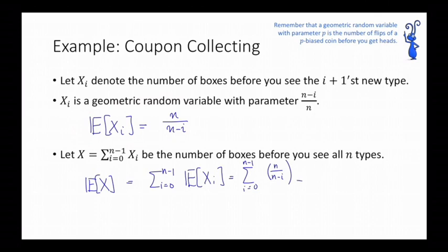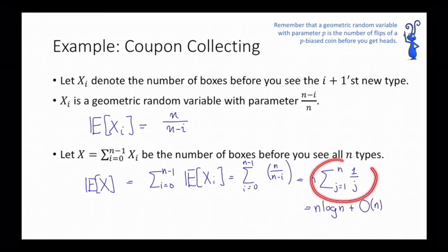Let x be the total number of boxes opened before seeing all n types of coupons; that is, x = Σ(i=0 to n−1) x_i. Using linearity of expectation, E[x] = Σ(i=0 to n−1) n/(n−i) = n · Σ(j=1 to n) 1/j = n log n + O(n), using the standard approximation for the harmonic sum.